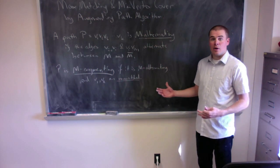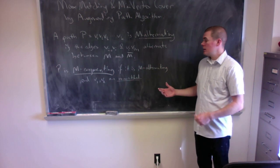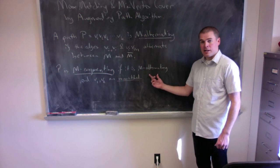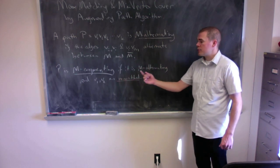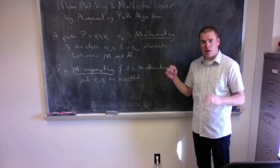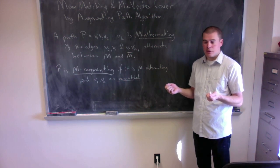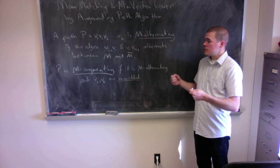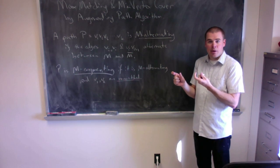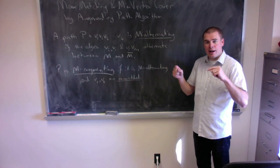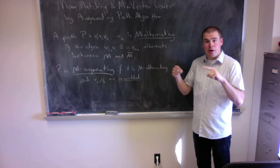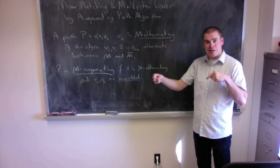We say that our path is M-augmenting if it is M-alternating, but also if the first and last vertices are not matched by anything in the matching. Really this means that the first edge and the last edge are not in my matching, and I can't extend it by an M-alternating path any further by following matched edges.